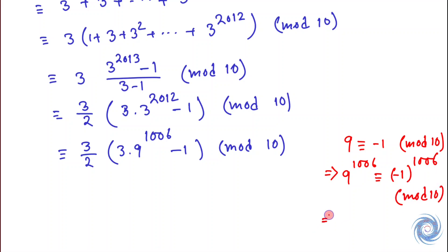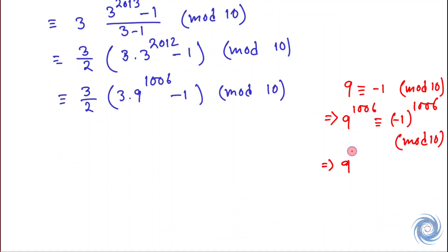From here we have 9^1006 mod 10, which is equivalent to 3 times (-1) mod 10.